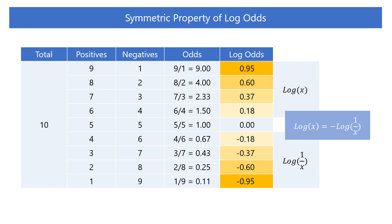In other cases, when the ratio of positive to negative is opposite, the log odds are the same in absolute value and opposite in sign. This is due to the fact that when the ratio of positive to negative is opposite, the value being logarithmically transformed is its inverse — it is the relationship between log(x) and log(1/x). Since log(x) is equal to minus log(1/x), the log odds are symmetric. Log odds are symmetrical when the odds is greater than 1 or less than 1, that is, when there are more positive cases or more negative cases. This property is useful in interpreting the results of logistic regression.